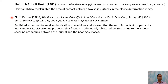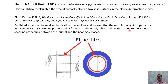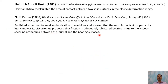Petrov conducted lubrication studies in machines, specifically journal bearings. He proposed that friction in an adequately lubricated bearing is due to the viscous shearing of the fluid between the journal and the bearing surfaces. He conducted journal bearing experiments and proposed that viscous shearing of the fluid was responsible for the friction. By this time it was established that in lubricated sliding, viscosity plays an extremely important role. He gave an equation for friction in journal bearings, now known as Petrov's equation.